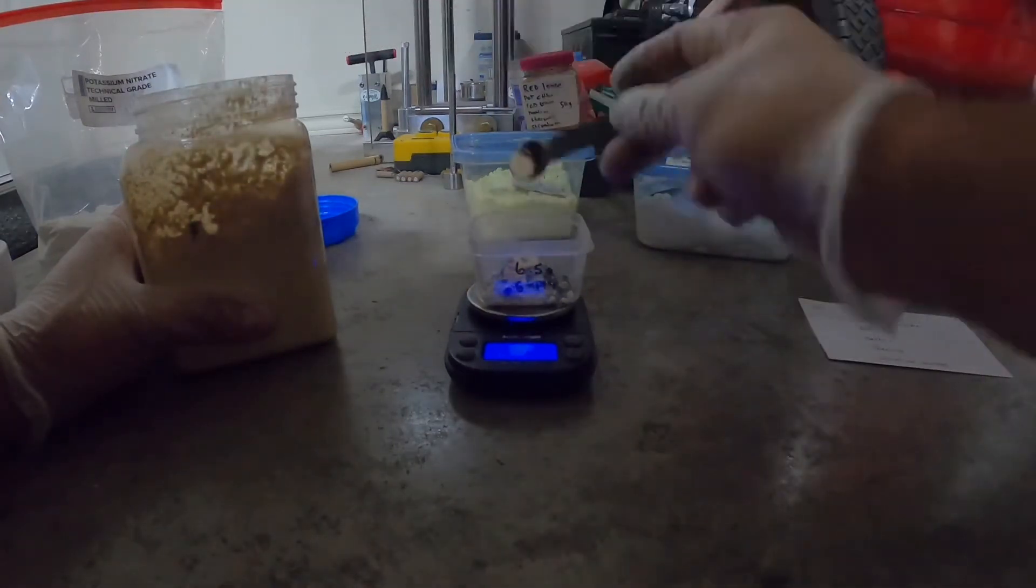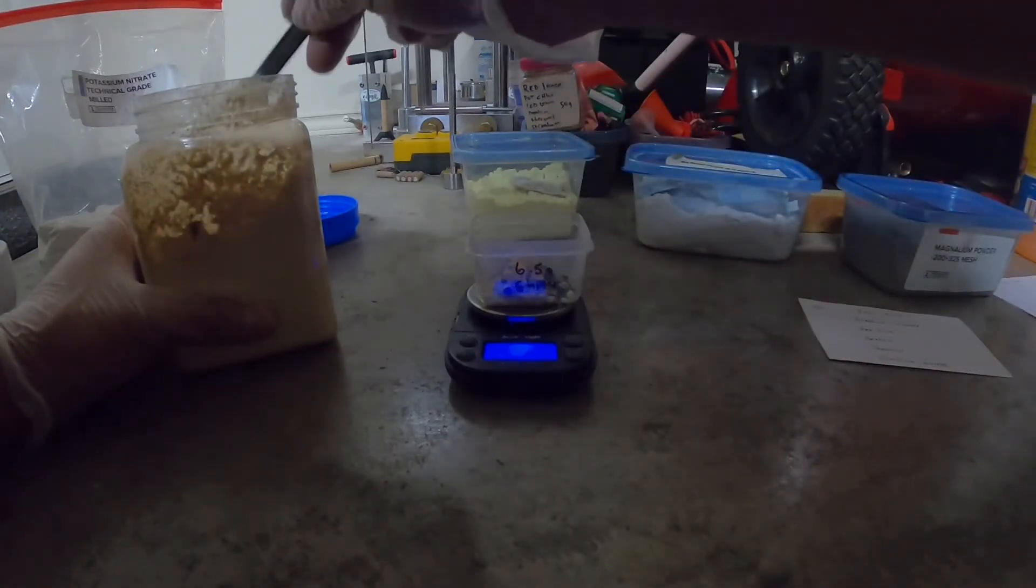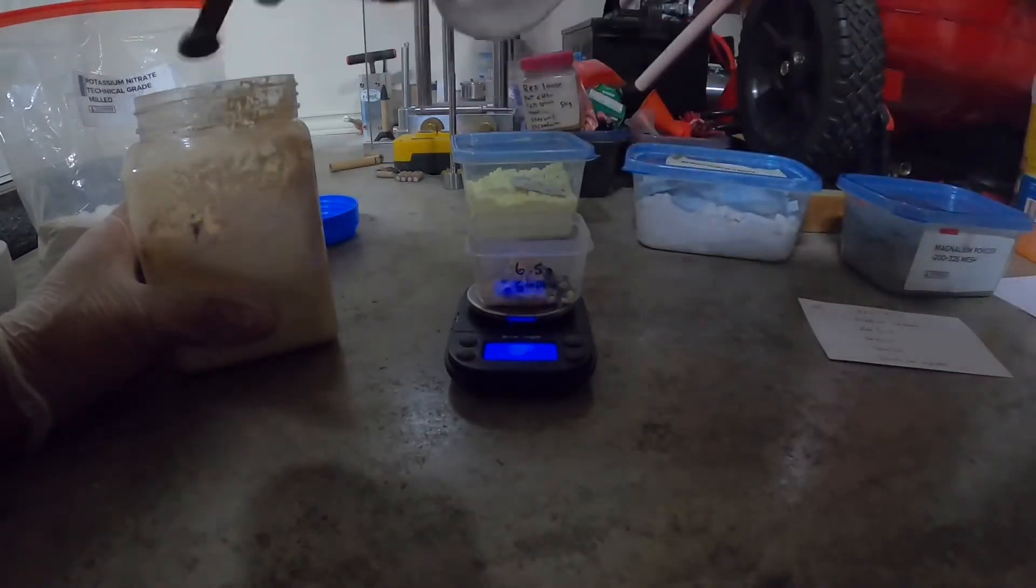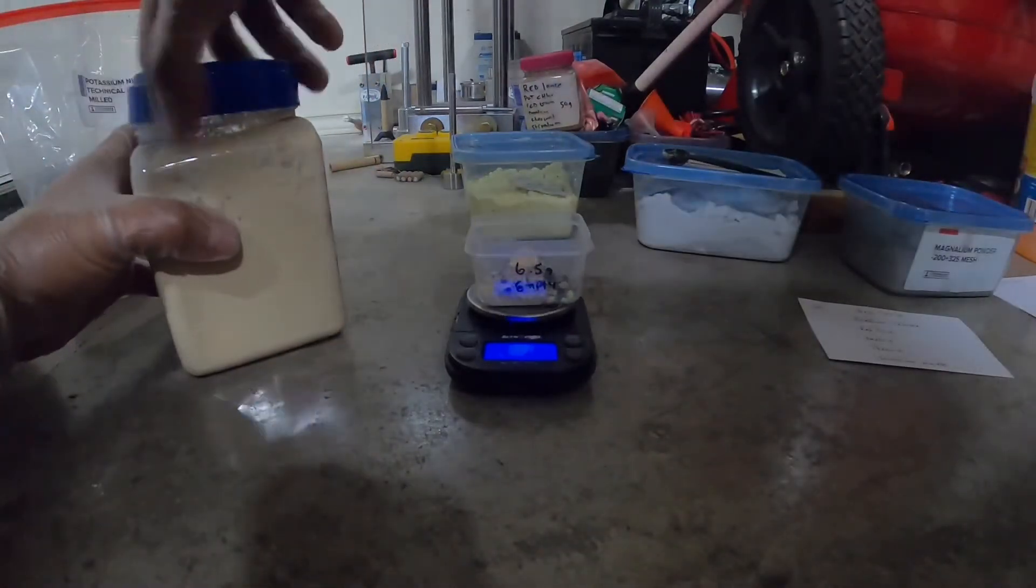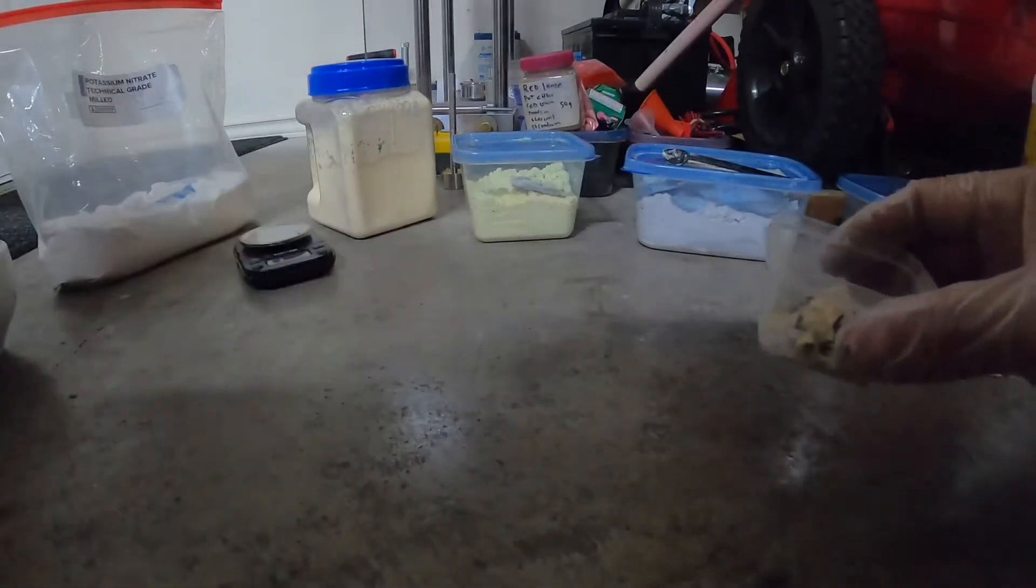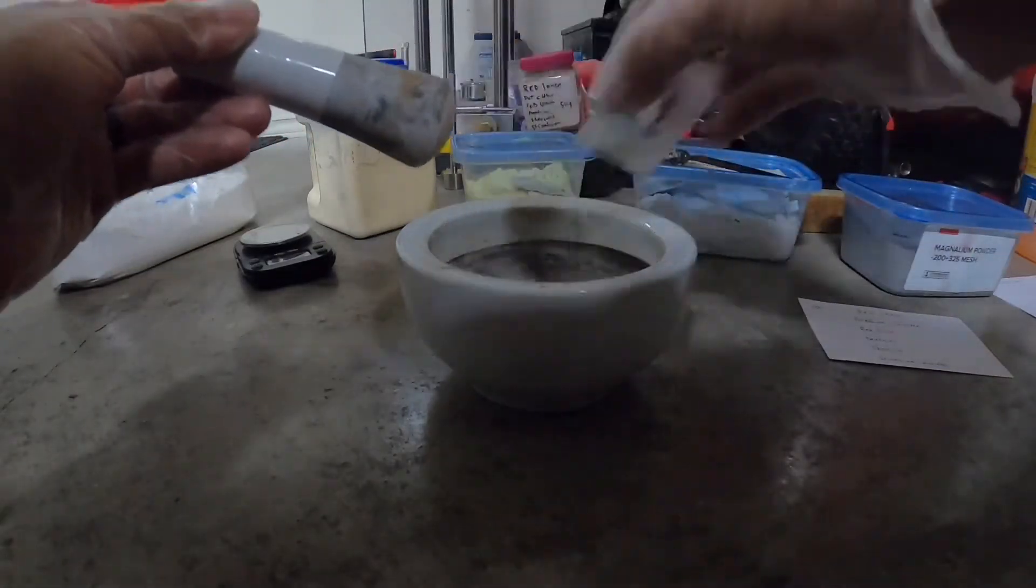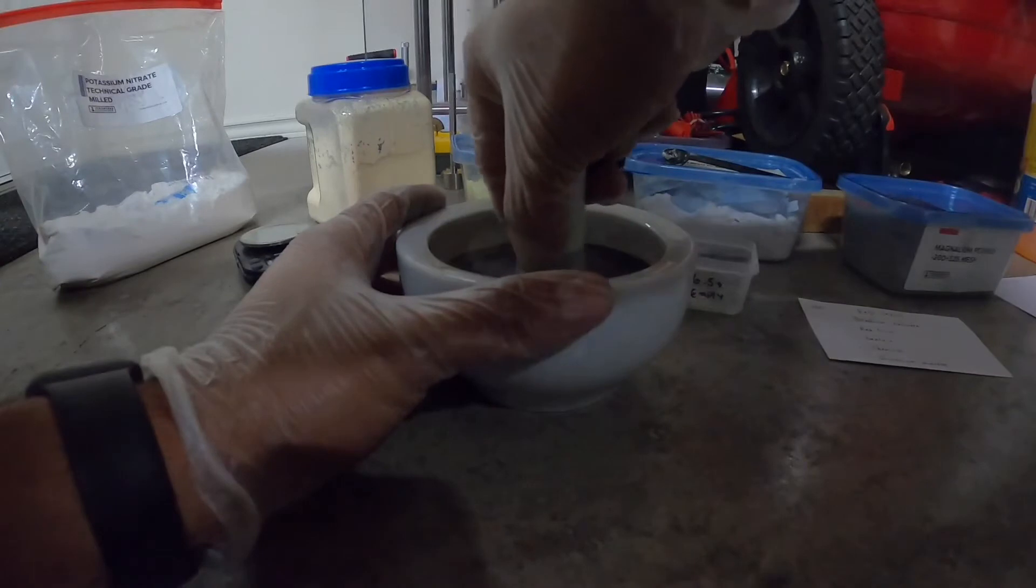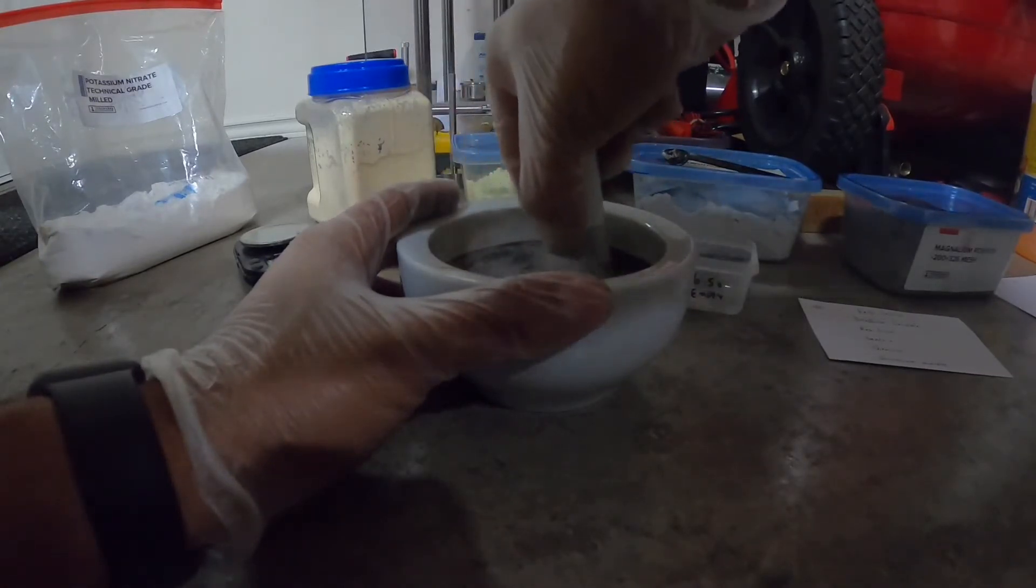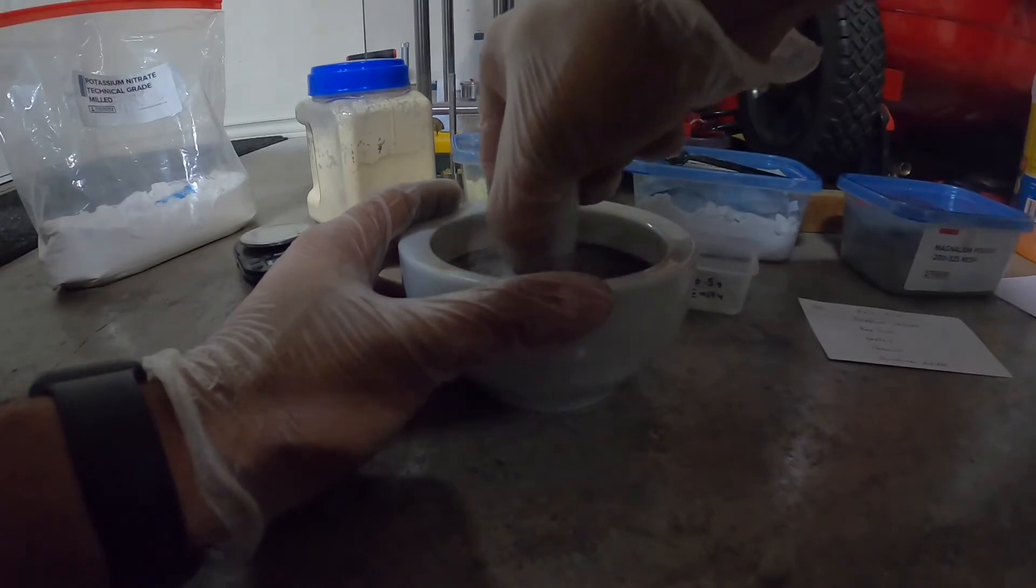I did notice online people were using like a grease or something to turn this into like a little flux or whatever. So I'm not too sure what I'm going to be using as my binder, but as a way to get it to compress. Because it has dextrin, I'm just going to keep using water, and I'm going to grind it very slowly because the aluminum is in there.